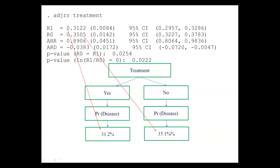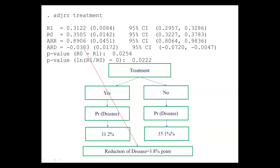The proportion of having disease from the treatment group was 31 percent — this is the adjusted value — and the proportion of having disease from the non-treatment group was 35 percent. This is called risk difference. From this procedure we can easily estimate risk difference using logistic regression. We can also estimate relative risk or risk ratio from this procedure. Thank you.